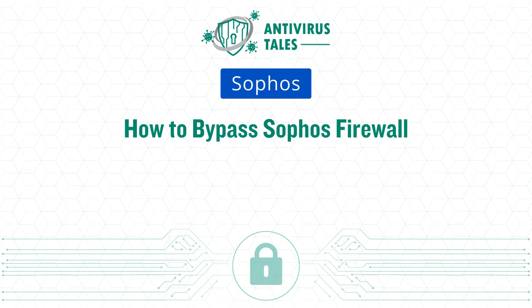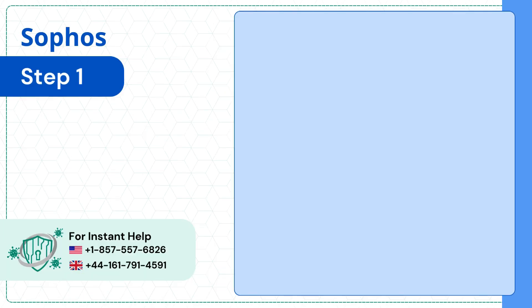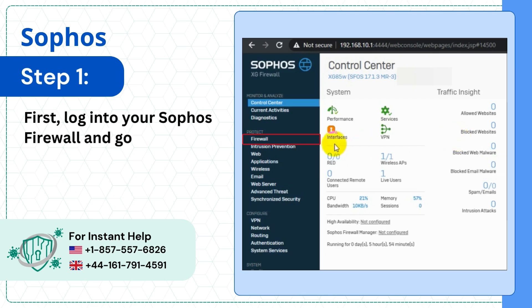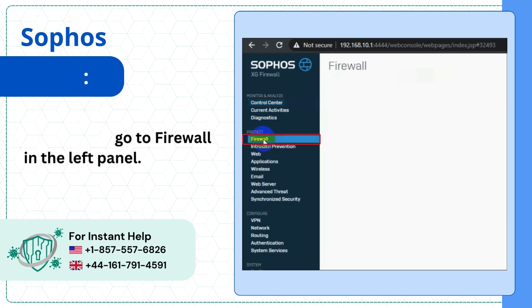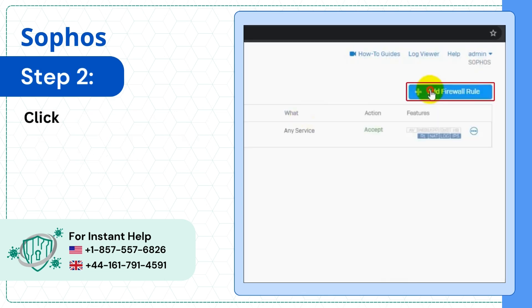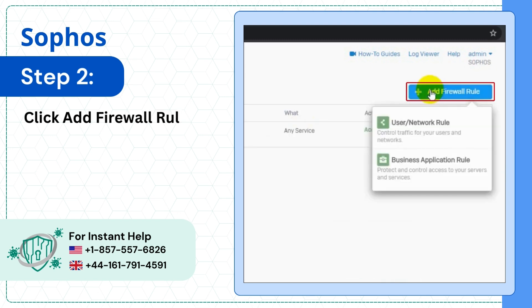How to Bypass Sophos Firewall. Step 1: First, log into your Sophos Firewall and go to Firewall in the left panel. Step 2: Click Add Firewall Rule and select User/Network Rule.